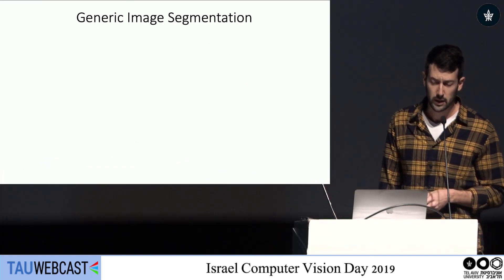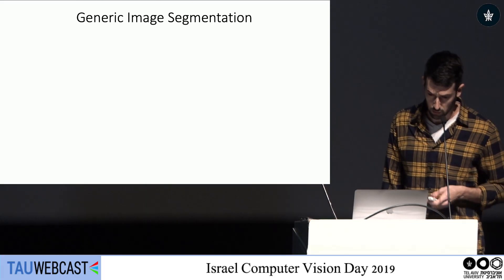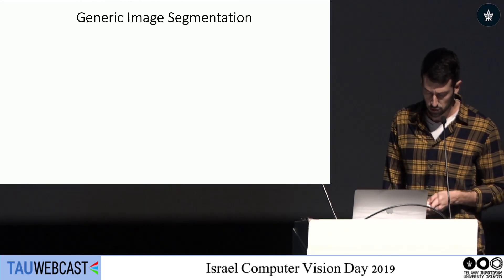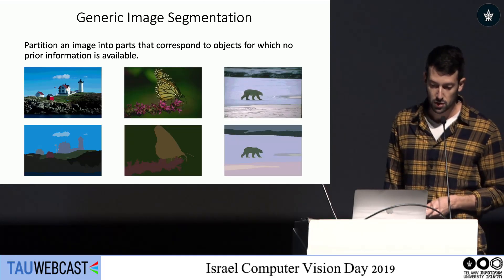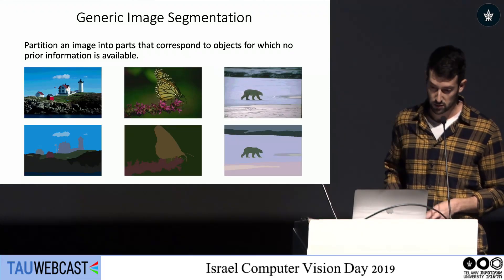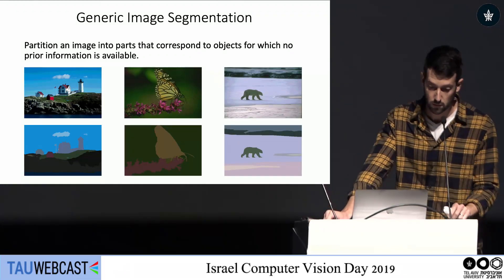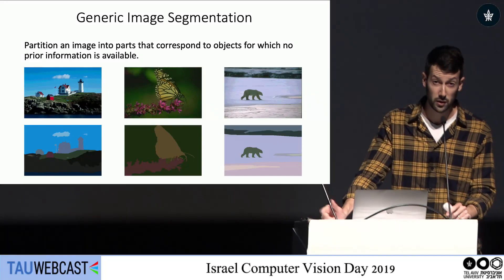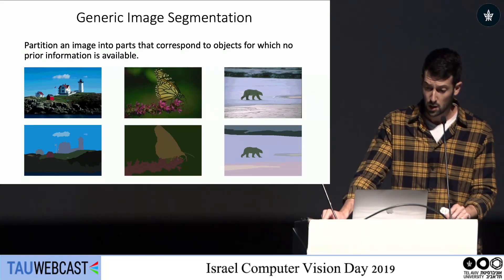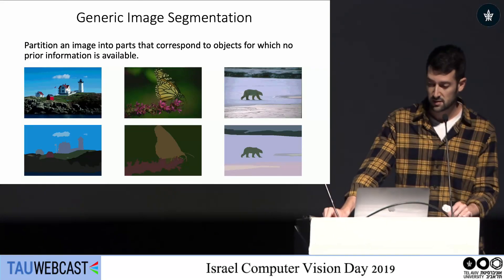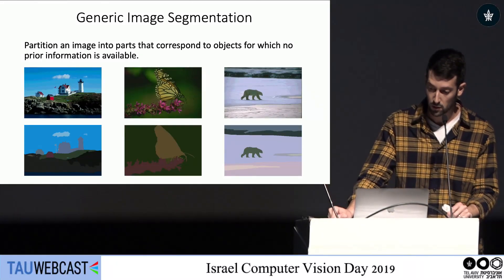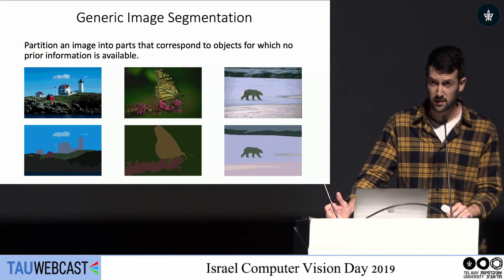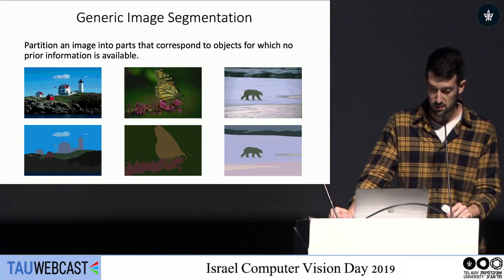I'll start with a quick overview of the generic segmentation task. In this task, we wish to partition an image into parts that correspond to objects which we don't have any prior information on. The difficulty is that we don't know the semantic meaning of each segment, and the test set can contain totally different objects than those seen in the training set.